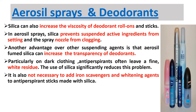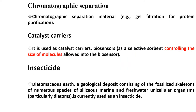Silica from diatoms is also used for chromatographic separation, as gel filtration for protein purification, as a catalyst carrier, in biosensors as a selective sorbent controlling the size of molecules loaded into the biosensors, and as an insecticide.